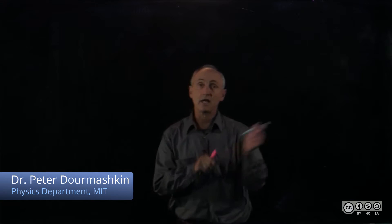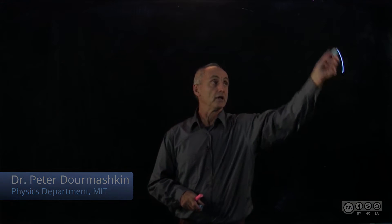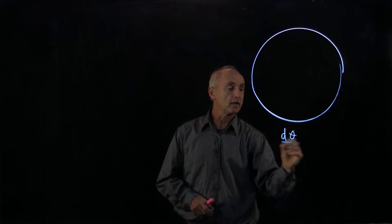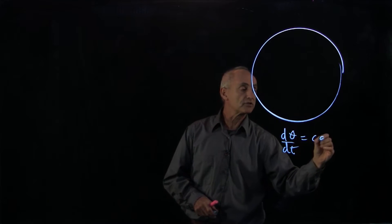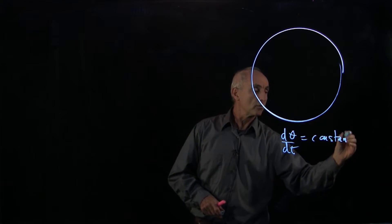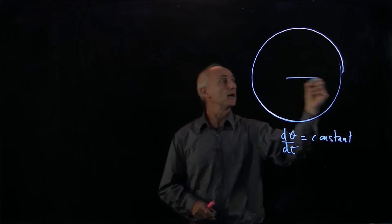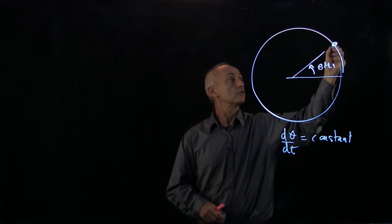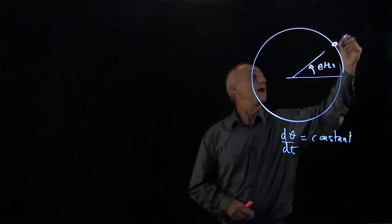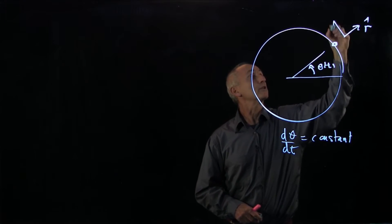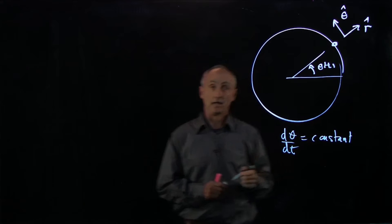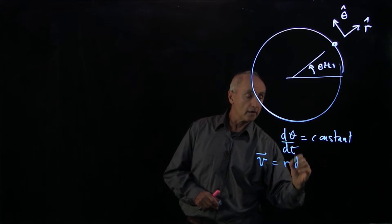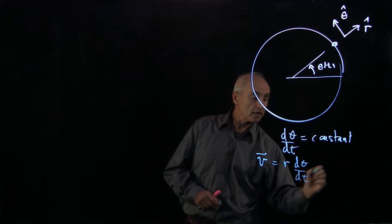For a particle moving in a circle, we found that when it's moving at a constant rate of dθ/dt — and let's recall what we meant by θ(t) — here's our particle, and we introduced our polar coordinates r̂ and θ̂. We found that the velocity was r(dθ/dt)θ̂.